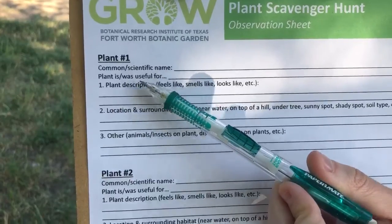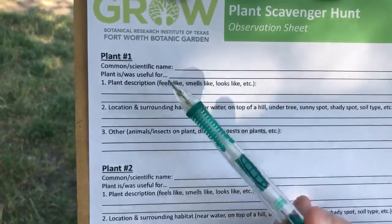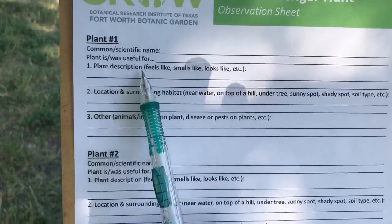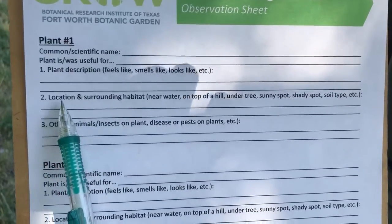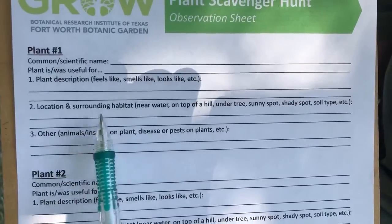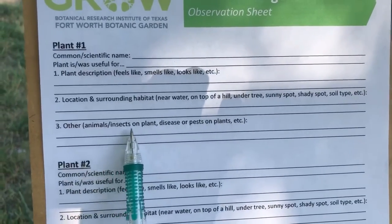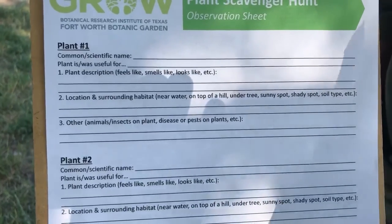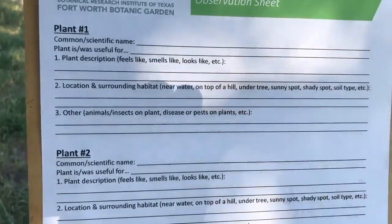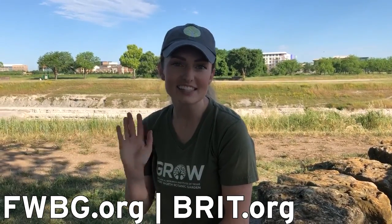You'll write what the plant was used for and maybe currently is still used for, as well as a plant description that you'll find when you head outside, the location and surrounding habitat, and other things. That could include animals or insects on the plant, diseases or pests you may see — that kind of stuff. Head to our website to find out more. Thanks so much for joining us guys — have fun, get outside, and stay safe.